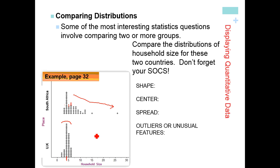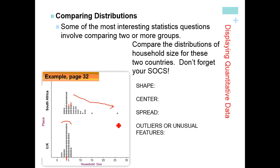You need to make sure you use words like larger and smaller. For spread, I can immediately see the main difference: the spread of South Africa is much larger than the spread or variability of the data in the UK. You can use numbers like standard deviation, or you can just visually explain how it's clearly more spread in South Africa than the UK.